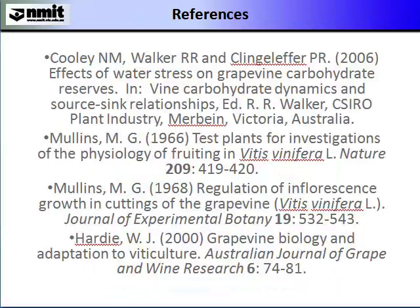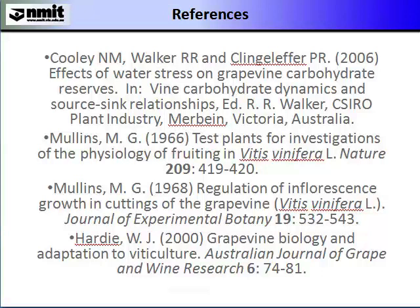In summary, vine management in warm climate regions is a compromise between carbohydrate production, evaporative transpiration demand, available water, and yield. Vines can adapt to water stress provided leaf area reductions result. To optimise your system, monitoring plant stress is essential. Plant water potential is a useful indicator of vine stress and can be conducted in commercial vineyards. Measurement of soil water is also recommended. When managing warm climate large canopy vines, you are managing for a compromise — and that is the take home message of this lecture.